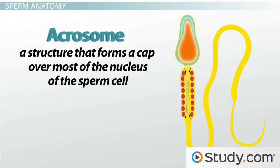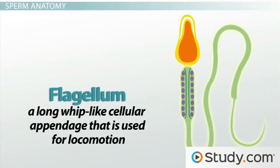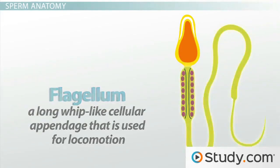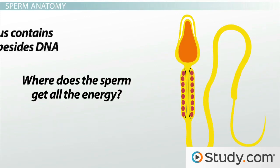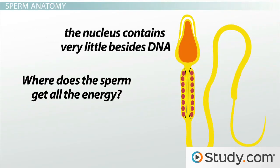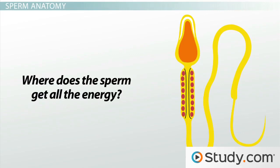The acrosome is a structure that forms a cap over most of the nucleus of the sperm cell. The main job of the acrosome is to penetrate the outer layers of the ovum so that the sperm can get inside. The flagellum is a long whip-like cellular appendage used for locomotion. A sperm cell uses its flagellum in a whip-like fashion, lashing it back and forth to propel the sperm forward. A portion of the flagellum is surrounded by mitochondria that provide the ATP that powers the whipping motion.